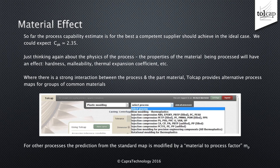So far, the process capability estimate is for the best a competent supplier should achieve in the ideal case. Thinking about the physics of the process, the properties of the material being processed will have an effect — hardness, malleability, thermal expansion coefficient and so forth. Where there's a strong interaction between the process and the part material, Tollcap provides alternative process maps for groups of common materials. For other processes, the prediction from the standard map is modified by a material-to-process factor MP. This is a good time to click the 'view all processes' link to see which processes are for specific materials and which are not. There are several groups for injection or compression moulding for various plastics, for example.